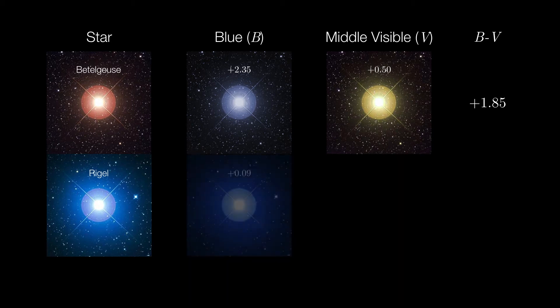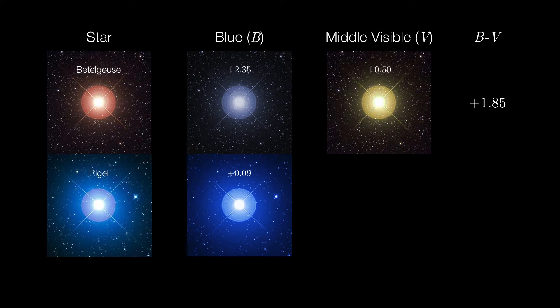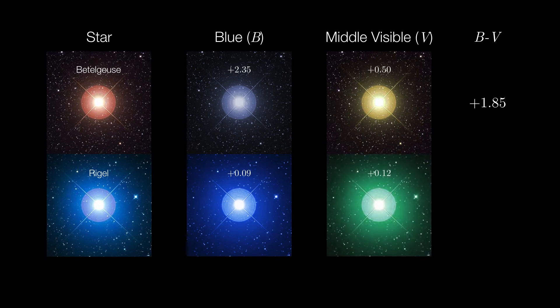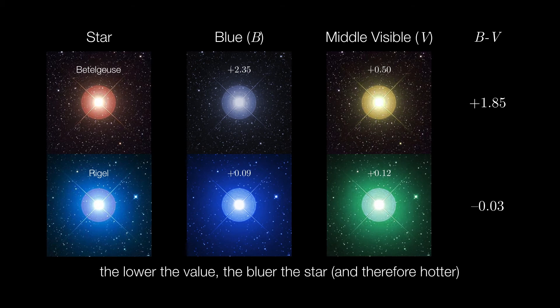Now let's do the same thing for Rigel. We see that it is very bright in the blue part of the spectrum. It has a very low magnitude of 0.09. In the visible part of the spectrum, it's a little bit fainter than Rigel in blue light. If we subtract the two magnitudes, we find that we get negative 0.03. So the lower the value, the bluer the star, and therefore the hotter.